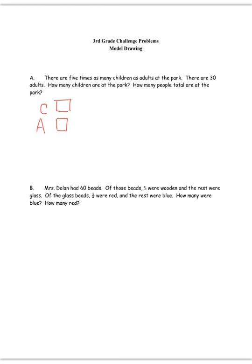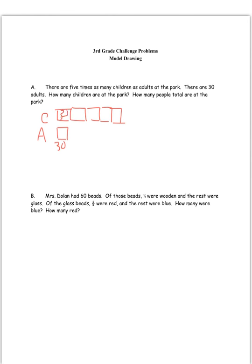And then right away when we come back and reread the problem, if there's five times as many children, there should be five boxes. So if there's five times as many children as adults at the park, and there's 30 adults, if that unit bar is 30, that means each of our unit bars would be 30, because we're starting with the unit bar the same for the children and adults. So if we said how many children are at the park, we know five 30s is 150, so there's 150 children. How many people total are at the park? There would be 180 total.